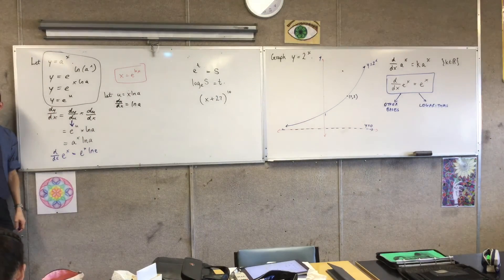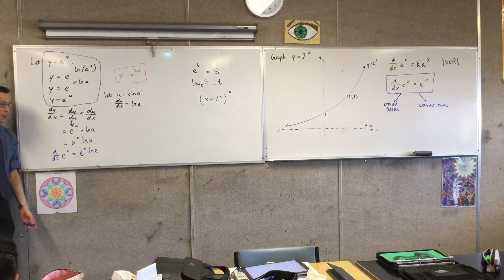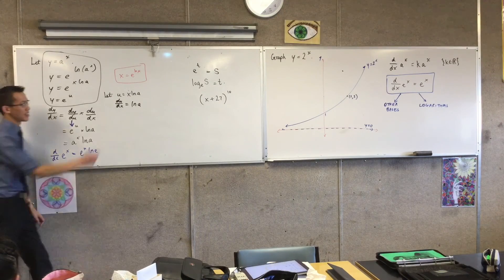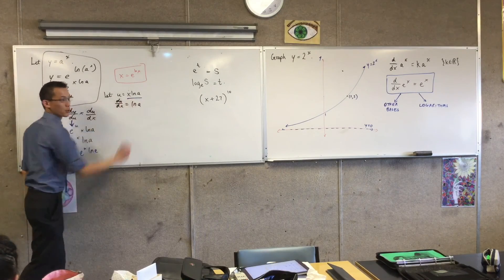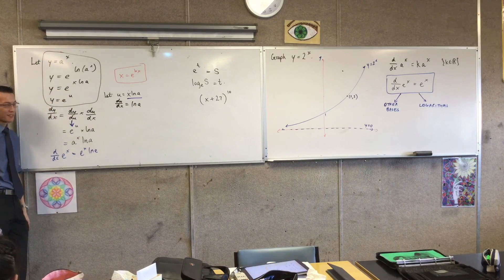Because u is not a constant — it's a variable — so we're differentiating with respect to u as a variable.